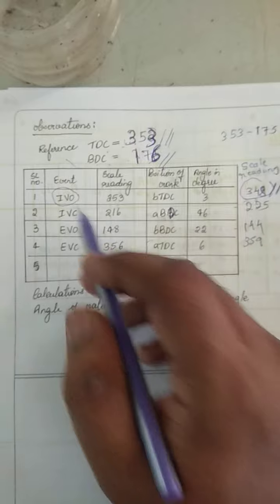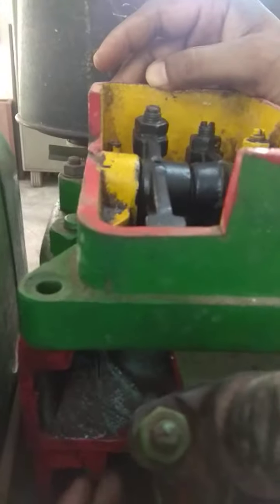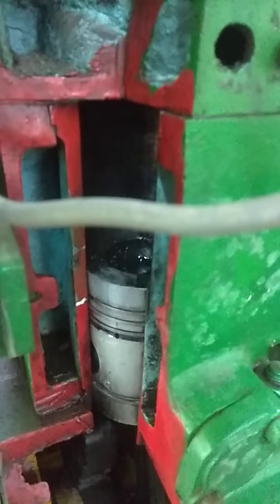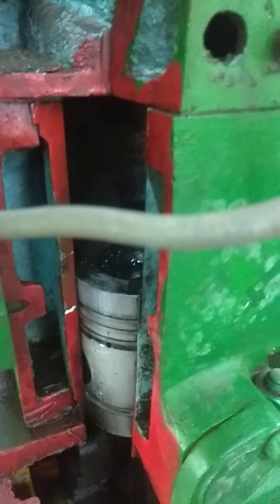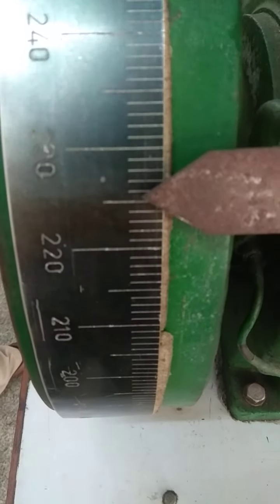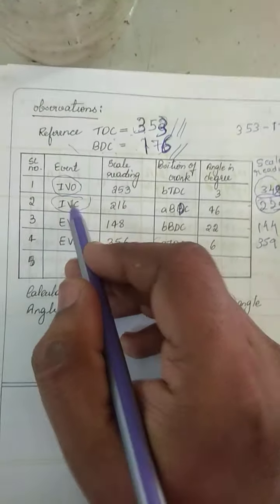Now we will try to find the inlet valve closing angle. The valve is currently tightened, meaning it is open. Rotate the wheel until the inlet valve just closes completely. Stop rotating the wheel and note down the angle. The angle is 225. Note down 225 as the inlet valve closing angle.